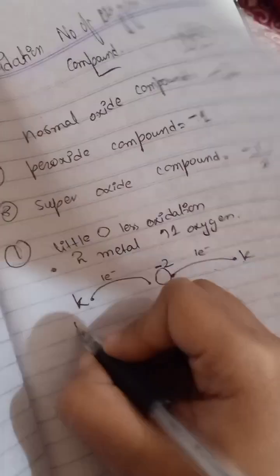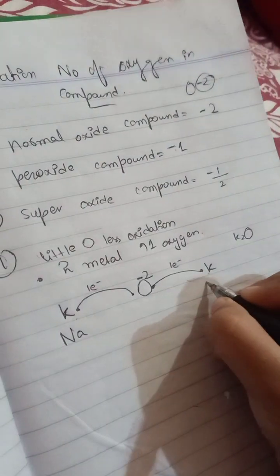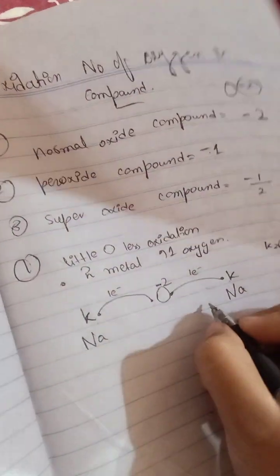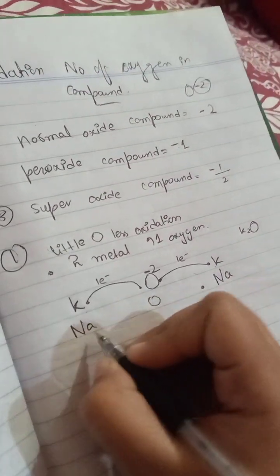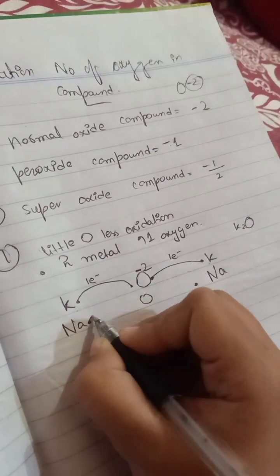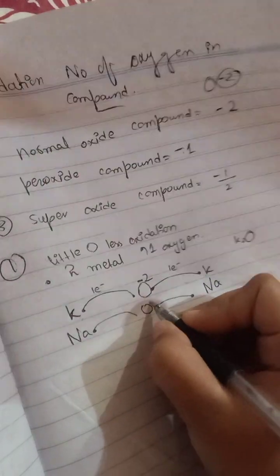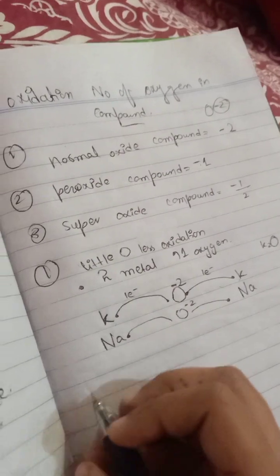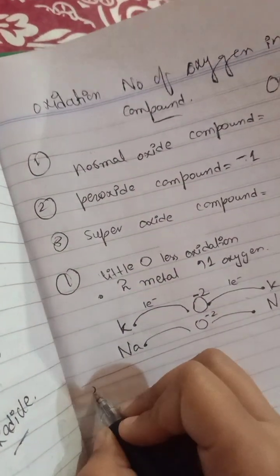As a second example, sodium: in the outer shell of sodium we have one electron, and here also one. It shares with oxygen, meaning oxygen gains two electrons, again giving a -2 oxidation number.